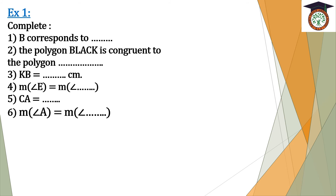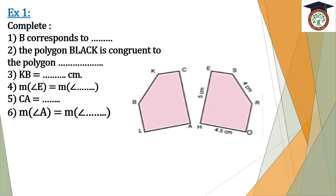Let's have an exercise. Exercise one: here we have two figures. Number one, B corresponds to — which vertex in our second figure is corresponding to vertex B? Yes, excellent — R. The polygon BLACK is congruent to the polygon...